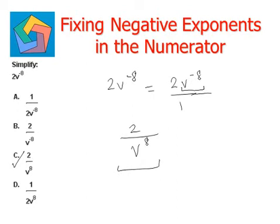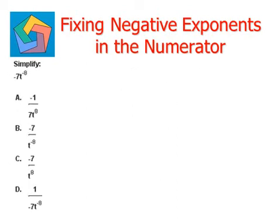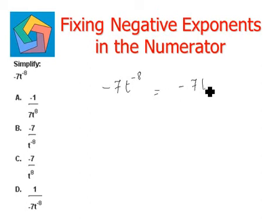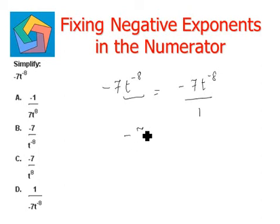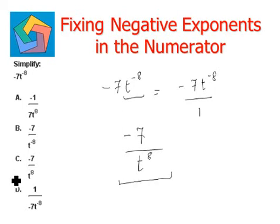Let's look at another example: simplify negative 7, t to the power of minus 8. Our rule remains the same — only the part with a negative exponent is moved to the denominator. In this case, only t to the power of minus 8 will go down, whereas the 7 will remain on top. So t to the power of negative 8 becomes t to the power of 8 when moved to the denominator. This becomes the final answer, which matches option C.